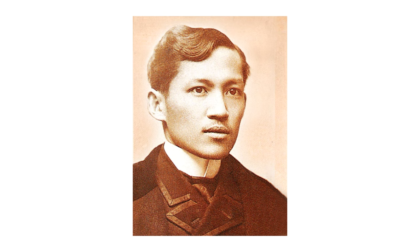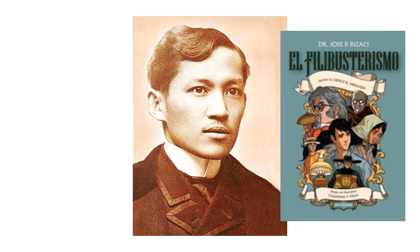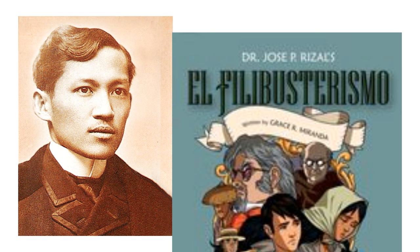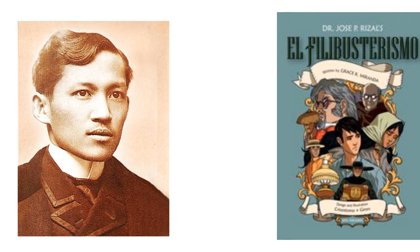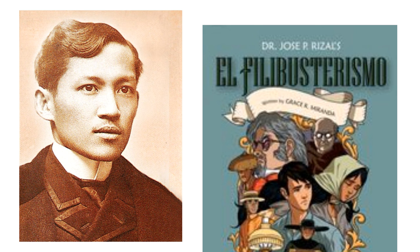For example, Rizal's work titled El Filibusterismo, or The Reign of Greed, is an artwork that denotes social functions. El Filibusterismo is Rizal's sequel to his first book Noli Me Tangere, or Touch Me Not. This book exhibits a dark theme that depicts the country's issues of abuse, corruption, and discrimination of the Spaniards towards Filipinos. Rizal also dedicated his second novel to the GomBurZa — standing for the names of Filipino martyr priests Mariano Gomez, Jose Burgos, and Jacinto Zamora — who were executed on charges of treason. This novel is considered one of his literary masterpieces that indirectly sparked the historic Philippine revolution against the Spanish regime.